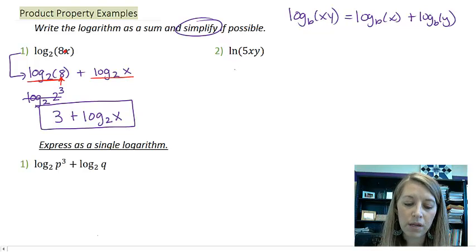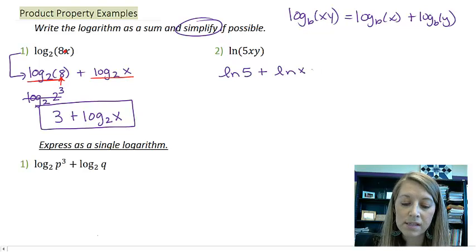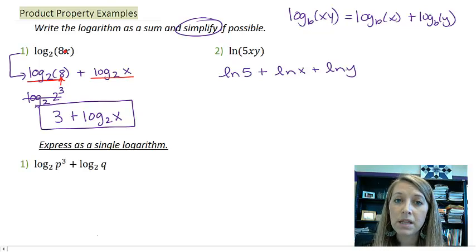Okay. Let's do the second one here. This gives me natural log of 5 plus natural log of x plus natural log of y. And so basically this is saying that we can use this product rule in more than just one addition. If it's all multiplication, then basically you're going to be left with all addition here.